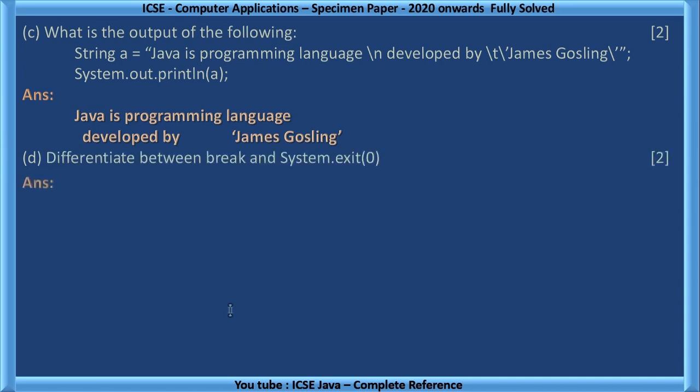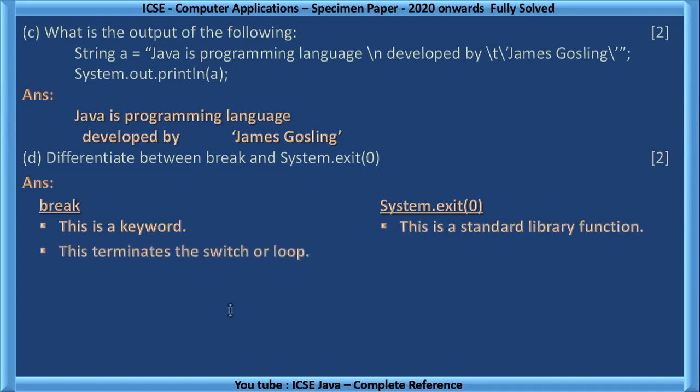Differentiate between Break and System.exit of 0. Break is a keyword, but System.exit of 0 is not a keyword, it is a standard library function. Break terminates the switch or loop. System.exit of 0 terminates the execution of the program.